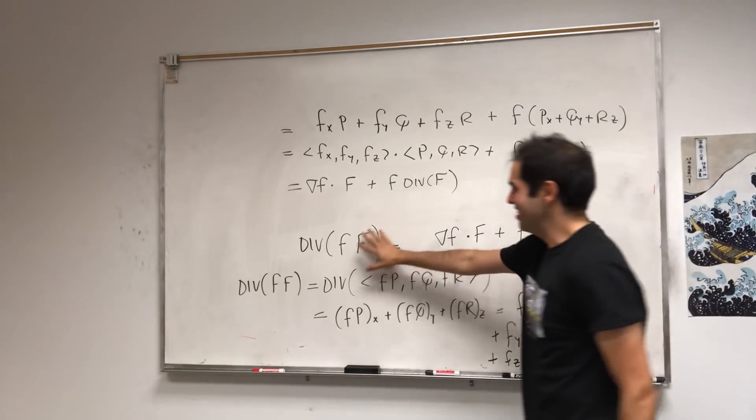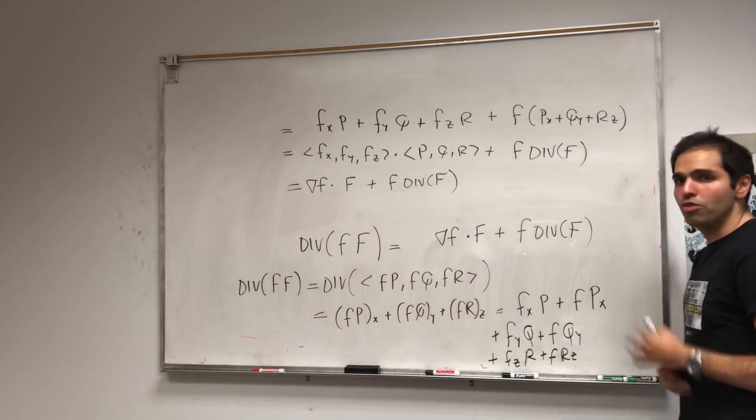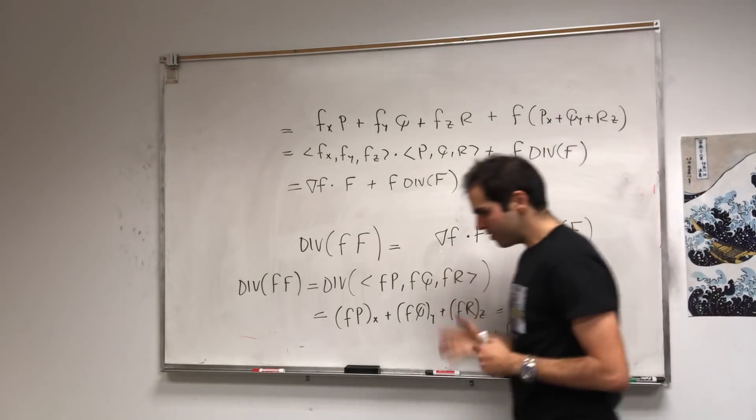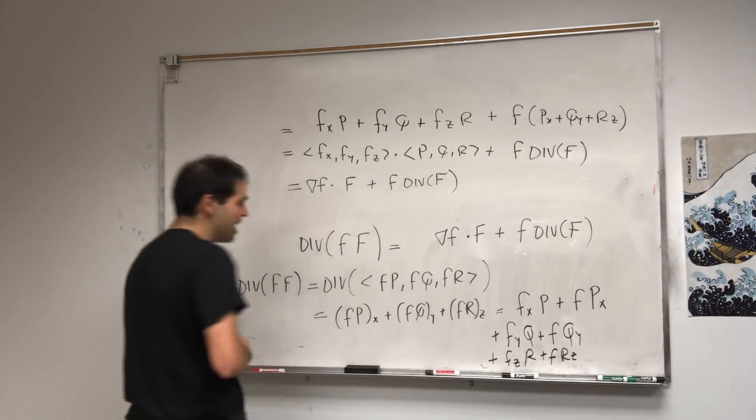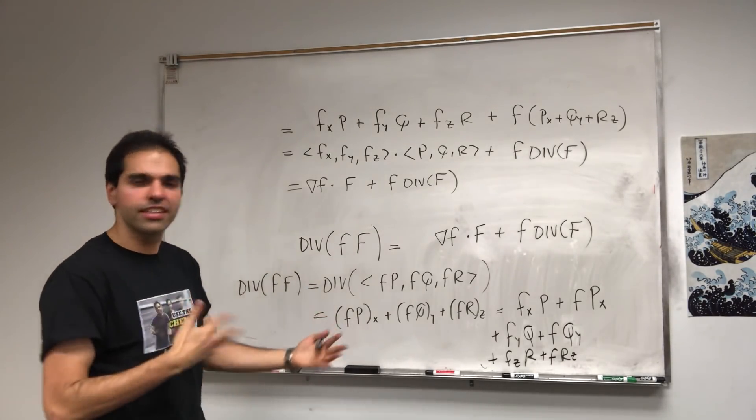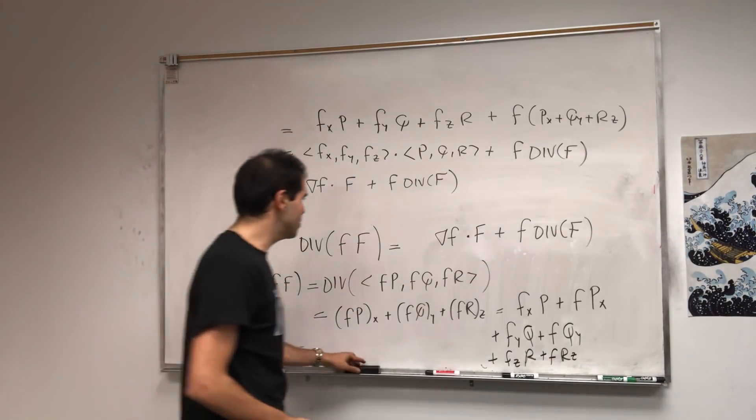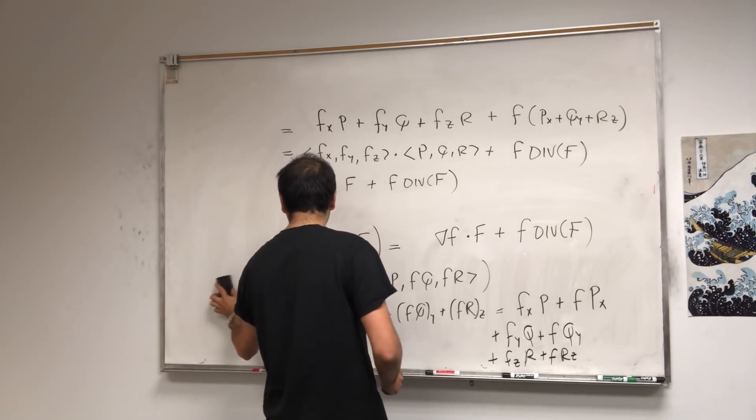So that was not the hard question, okay? This people got, so kind of a product rule for divergence. And now we want, basically, whoever says product rule says integration by parts. So we'll also derive some integration by parts formula.